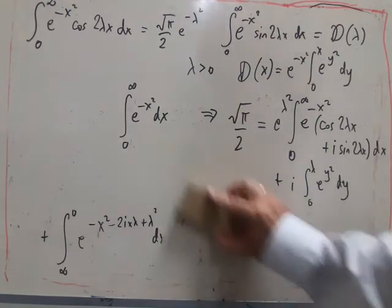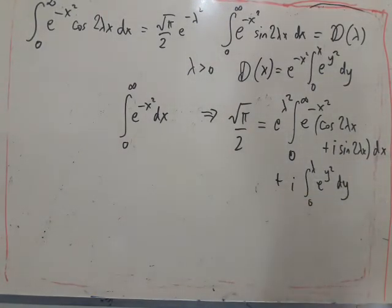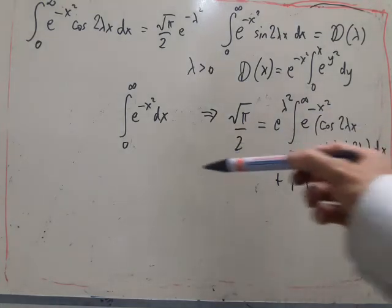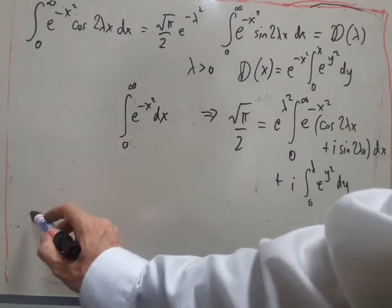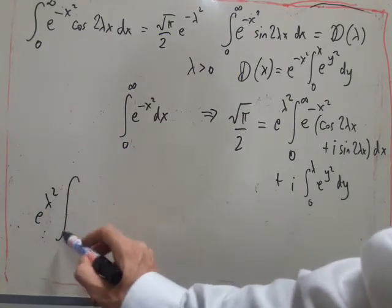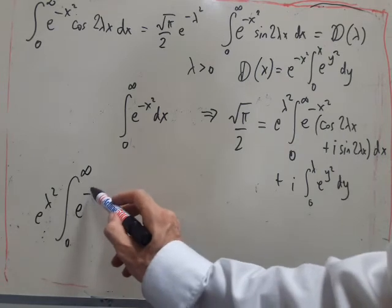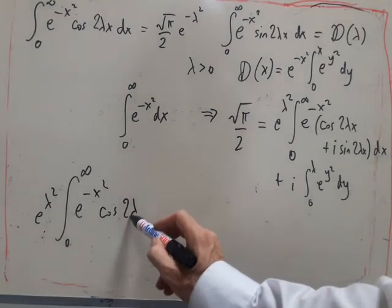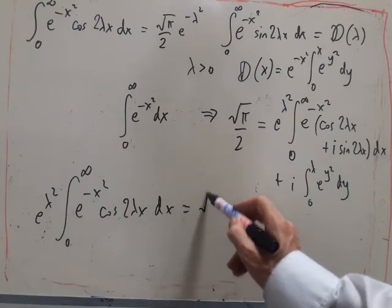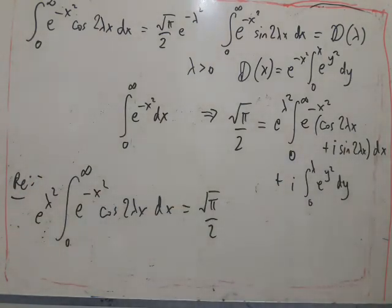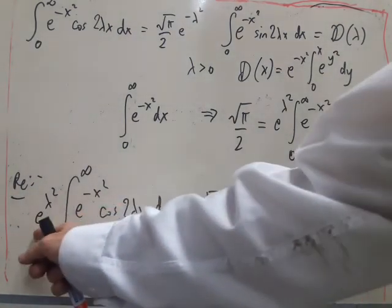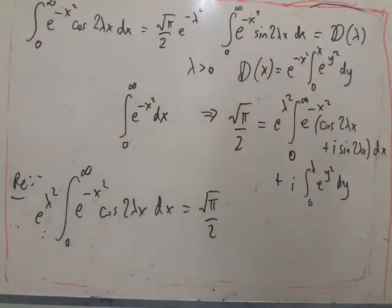Now all we need to do is take real and imaginary parts. So taking the real part, we end up, real parts of this expression, and dividing by e, okay, well, I'll just do it slowly. We'll end up with e to the lambda squared minus integral from zero to infinity of e to the minus x squared cos 2 lambda x dx is equal to root pi over 2. So that's, that's the real part gives me that. And then you can see I can just divide this by e to the lambda squared, and I end up with the first expression.